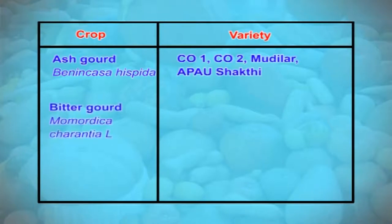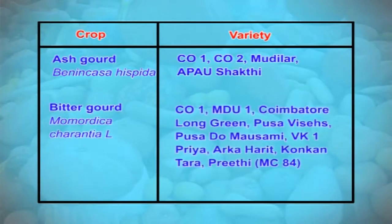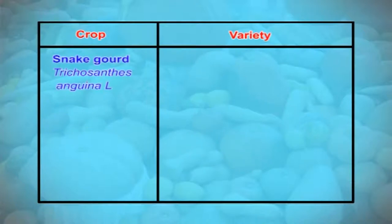In bitter gourd, which is botanically known as Momordica charantia, the common varieties are Ko-1, MDU-1, Coimbatore long green, Pusa Vise, Pusa Do Mausami, VK-1, Priya, Arka Harit, Konkan Tara, and Preeti.